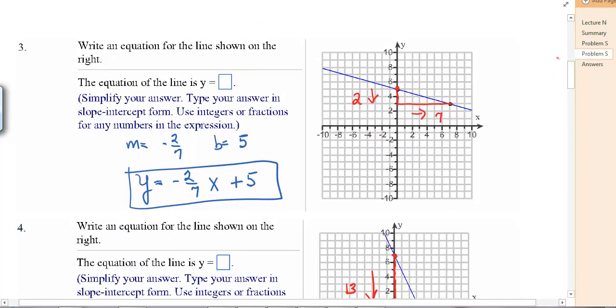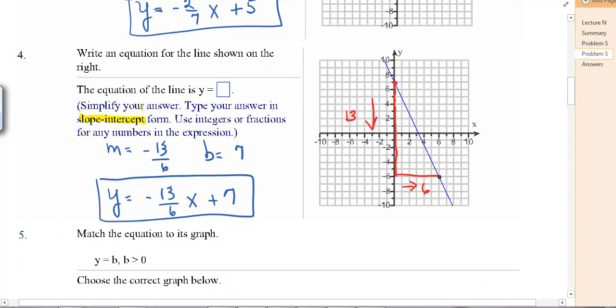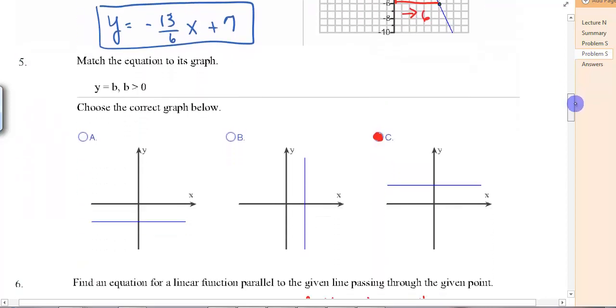Same thing with this one. We have to determine the y-intercept, which is at 5. So b equals 5 there. And then to get to this point over here, we went down 2 over 7. So m is negative 2 sevenths. Put that in the form of the equation. And it does tell you what form that your answer should be in. So be aware when it asks for those. This one is wanting slope-intercept. Our y-intercept is 7. And we went down 13 and over 6. Negative 13 sixths is our slope. So we have our equation here.